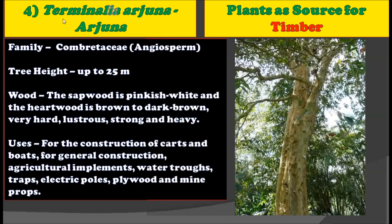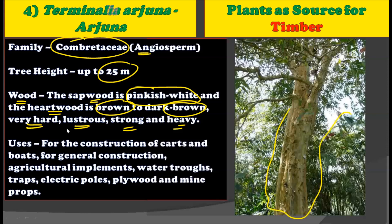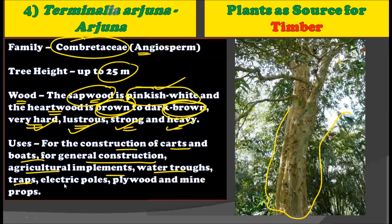The next plant for timber production is Terminalia arjuna, commonly called Arjuna. It belongs to the angiosperm family Combretaceae and can grow up to a height of 25 meters. The sapwood of Terminalia arjuna is pinkish white, and the hardwood is brown to dark brown in color. It is very hard, lustrous, strong, and heavy wood. The timber is used for the construction of carts, boats, general construction, agricultural implements, water crops, traps, electric poles, plywood, and mine props.